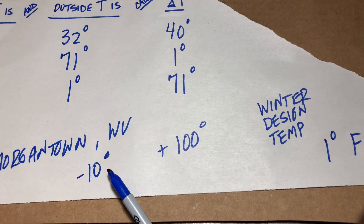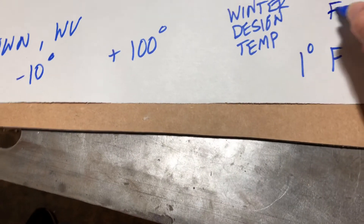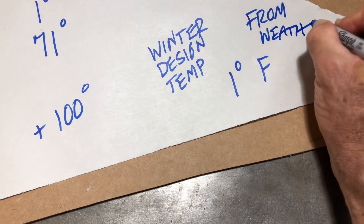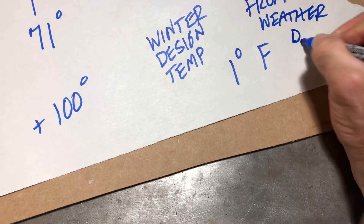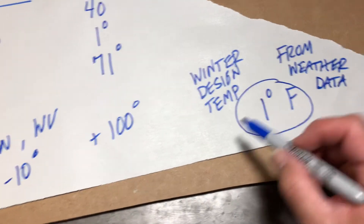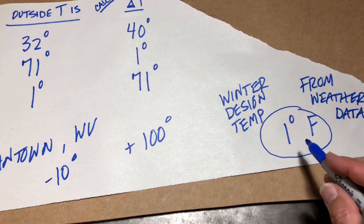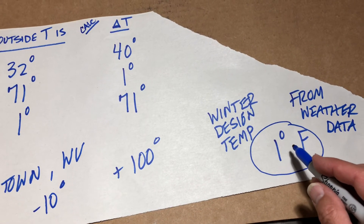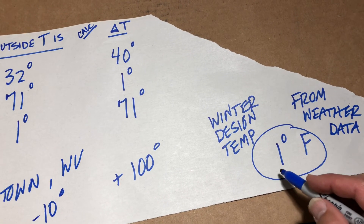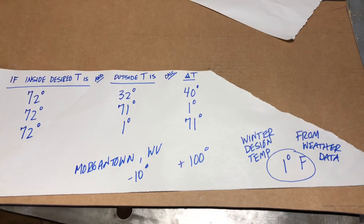So the winter design temperature comes from weather data, and we're going to use 1 degree for Morgantown. It would be very different for Florida — a lot higher — and very different for somewhere way up in Maine — a lot lower. But that's the concept, so get that in your head. You'll be seeing that delta T when we do the design heat load calculations.